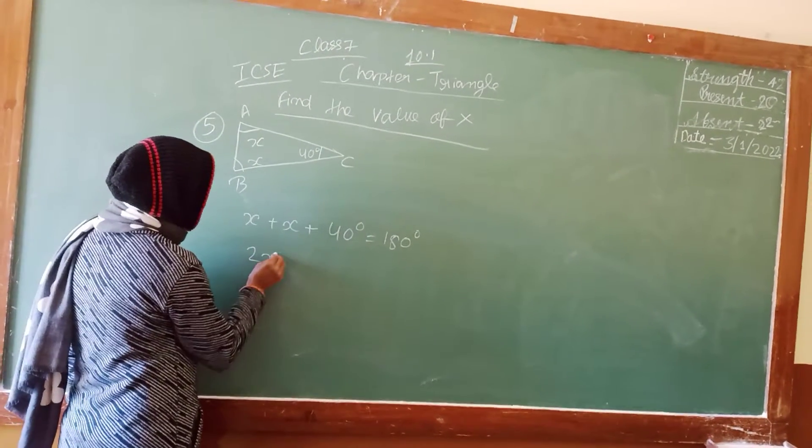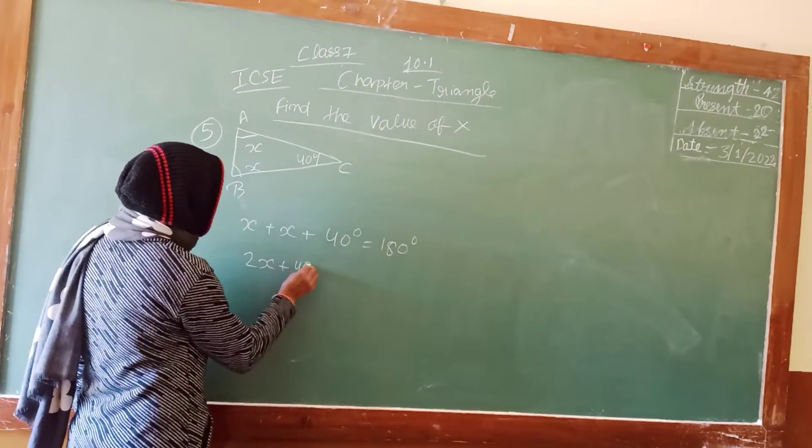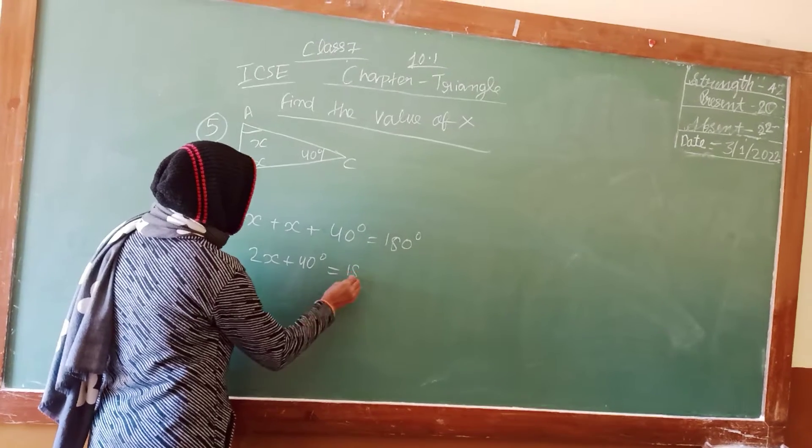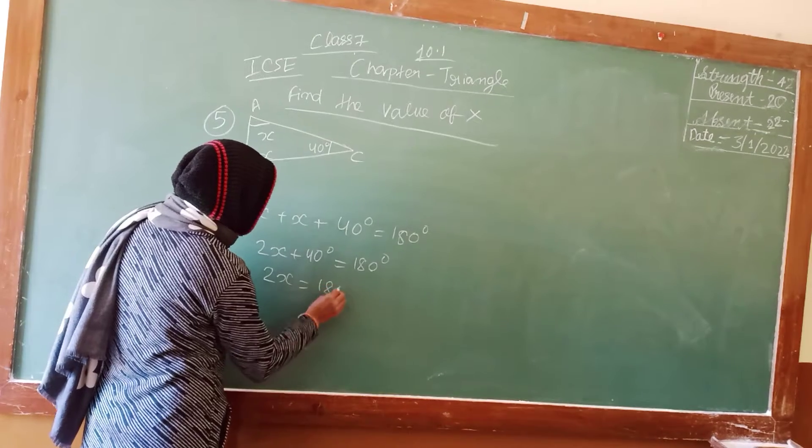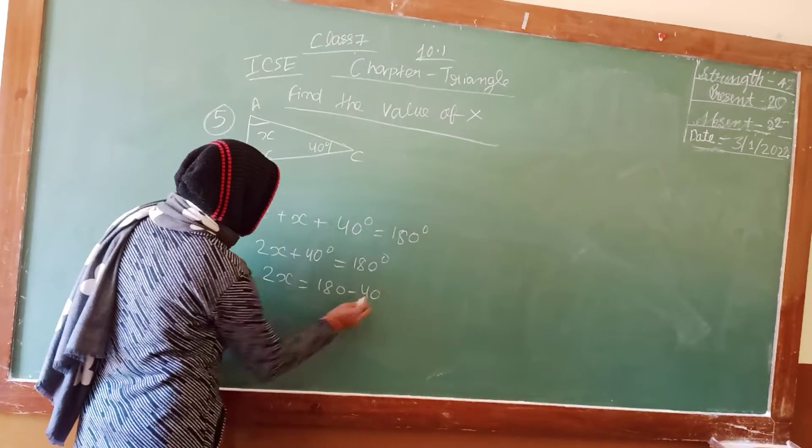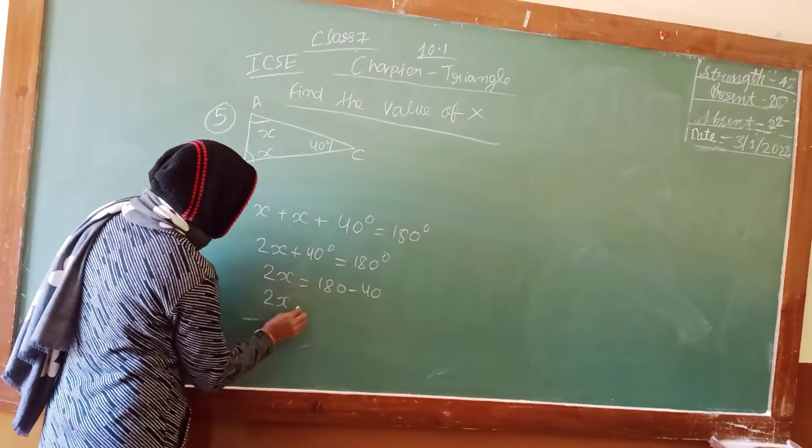So here, 2x plus 40 degrees equals to 180. 2x equals to 180 minus 40. 2x equals to 180 minus 40, that is 140.